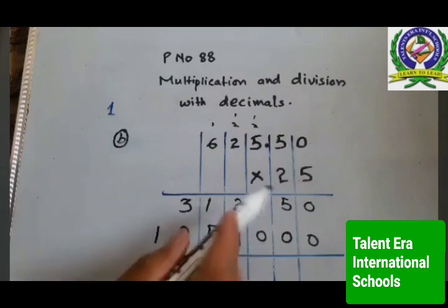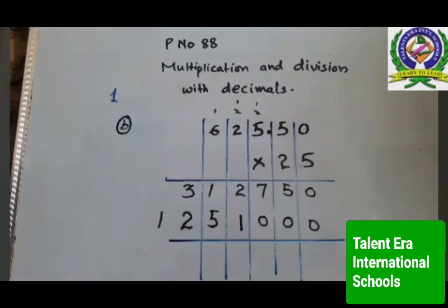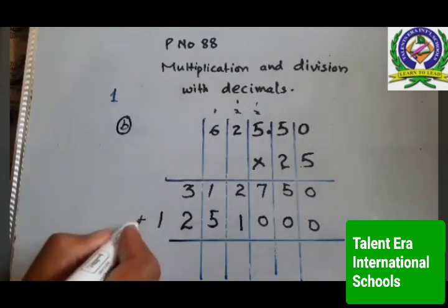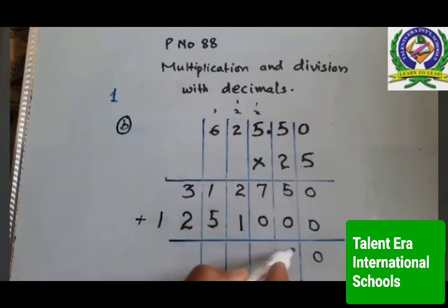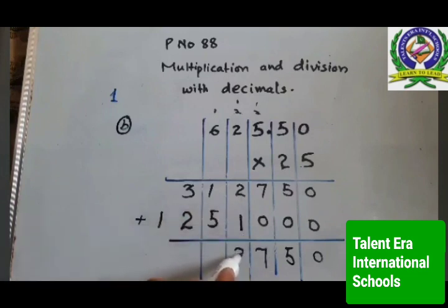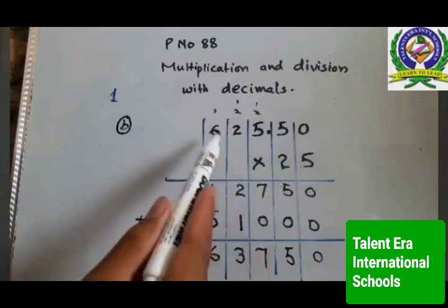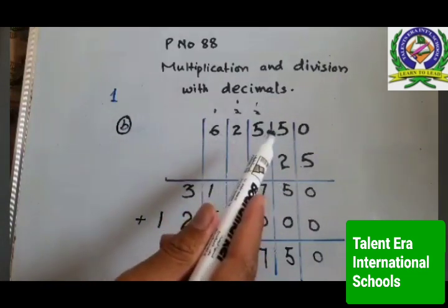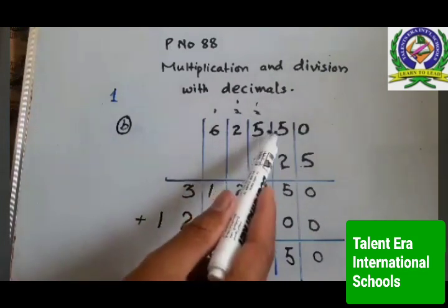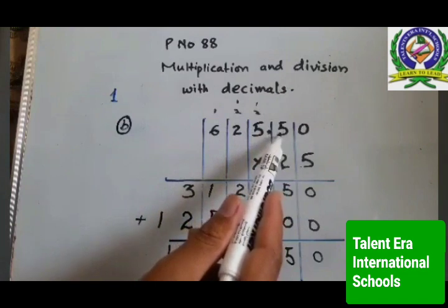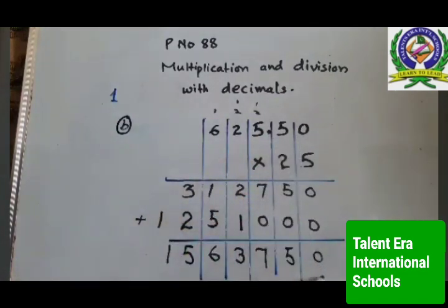Now after multiplying, you have to add them. 0 in this column, 5 plus 0 is 5, next column: 7 plus 0 is 7, 2 plus 1 is 3, 5 plus 1 is 6, 3 plus 2 is 5, and 1 carries. Here you can see the multiplication result. Now where do you place the decimal? Count after the decimal point — there are 2 digits. So from the right side, count 2 digits and place your decimal point here.